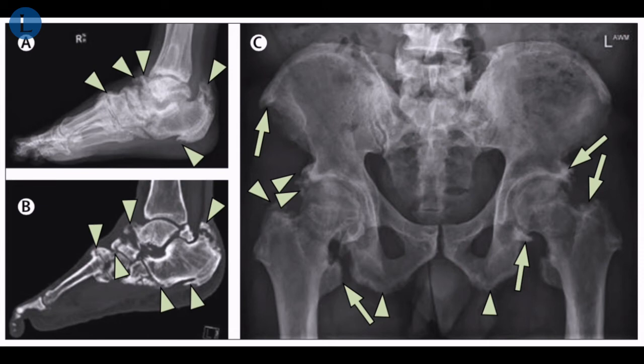Additionally, the sacroiliac joints are well preserved, where ankylosis of the sacroiliac joints, along with enthesopathy, may prompt suspicion of spondyloarthritis.